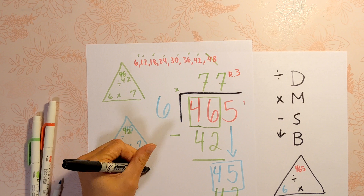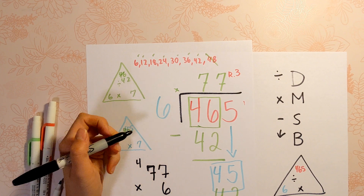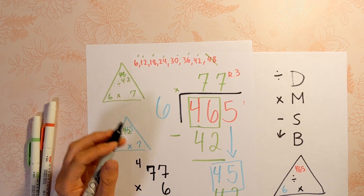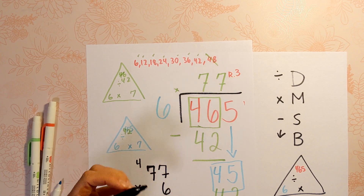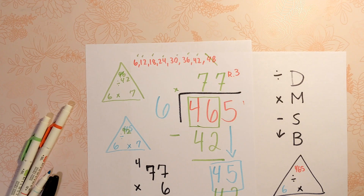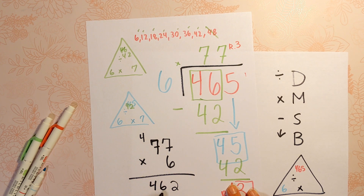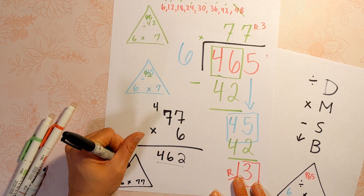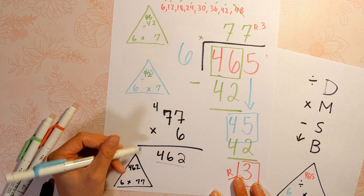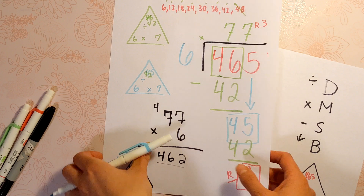I want you to check this with multiplication. 77 times 6: 6 times 7 is 42, and 6 times 7 is 42, so 6 times 70 plus 4 carried gives us 46, making 462. The remainder 3 is what gets us up to 465. So 6 times 77 equals 462, and then 463, 464, 465 — remainder 3. That's how we divide using the standard algorithm with a remainder.